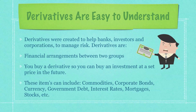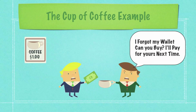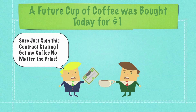These items commonly are commodities, corporate bonds, currencies, government debt, interest rates, mortgages, stocks, etc. Here's a really simple example. Let's say you go to the coffee shop with your buddy and you don't have your wallet. Your buddy says, fine, I will buy you a cup of coffee today for $1, and in exchange, the next time we meet, you will buy me a cup of coffee no matter what the price is. The only difference between that situation and what goes on on Wall Street is contracts are signed. So if a cup of coffee costs $2 in the future, you just saved yourself a dollar.